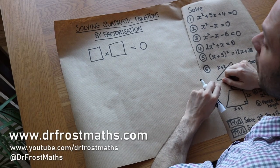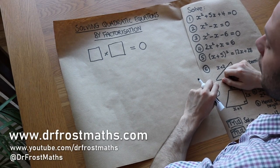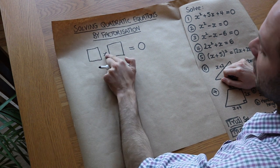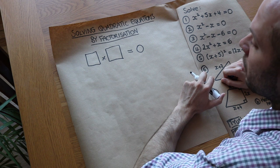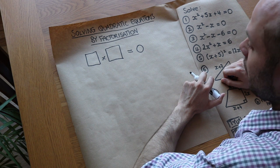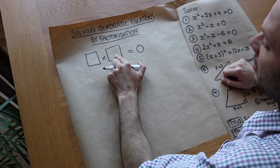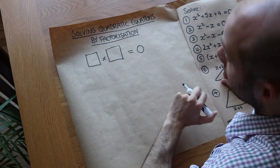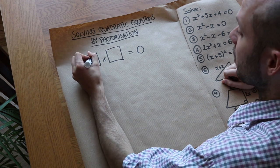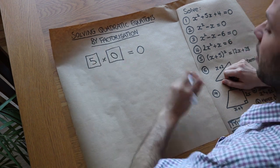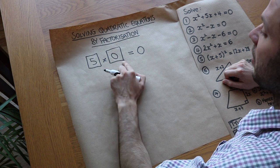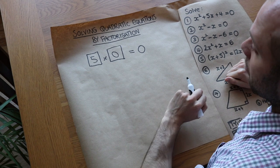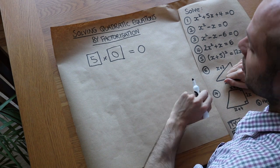Hello and welcome to this video on solving quadratic equations by factorization. Now let's suppose that we have two mystery numbers that multiply together to give zero. What do we know about one of the numbers? Well, we know that one of these has to be zero. There's no way of multiplying two numbers to get zero unless one or both of the numbers are zero. So we could have five times zero, or zero times six, but at least one of these numbers has to be zero, and we can use that principle to solve many different types of equations.